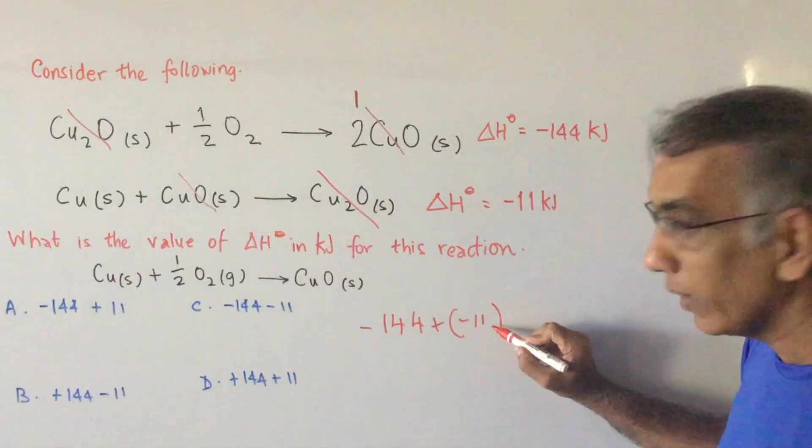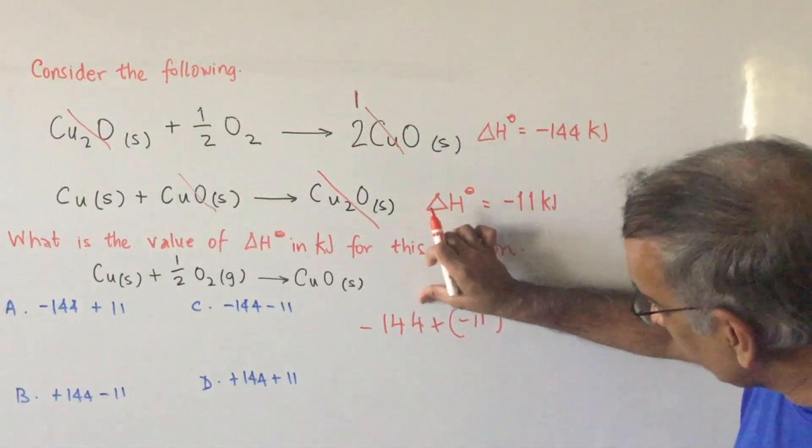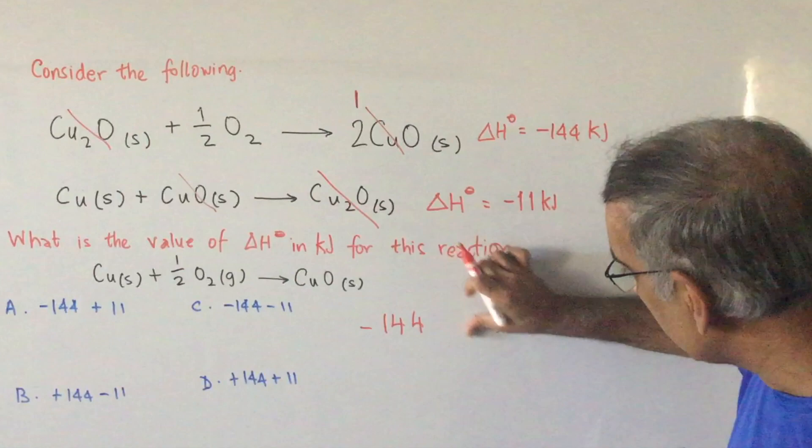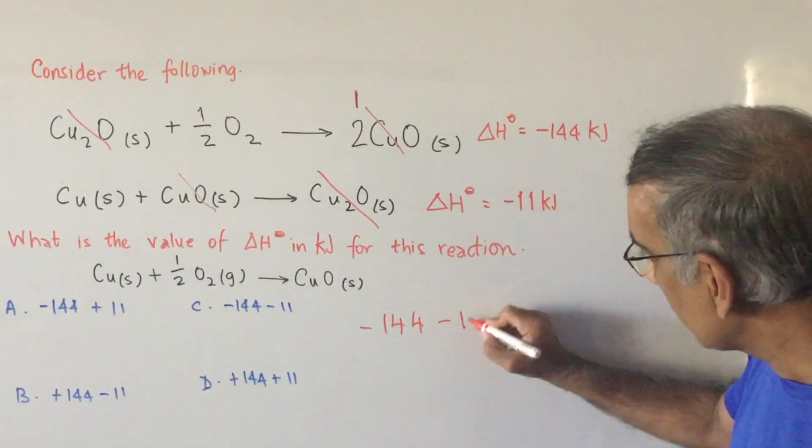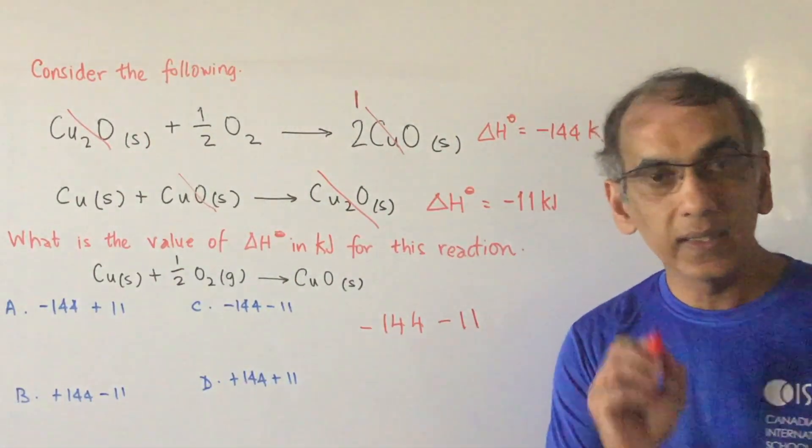this one would be equivalent, because if we remove this, it would be the same as C: minus 144 minus 11.